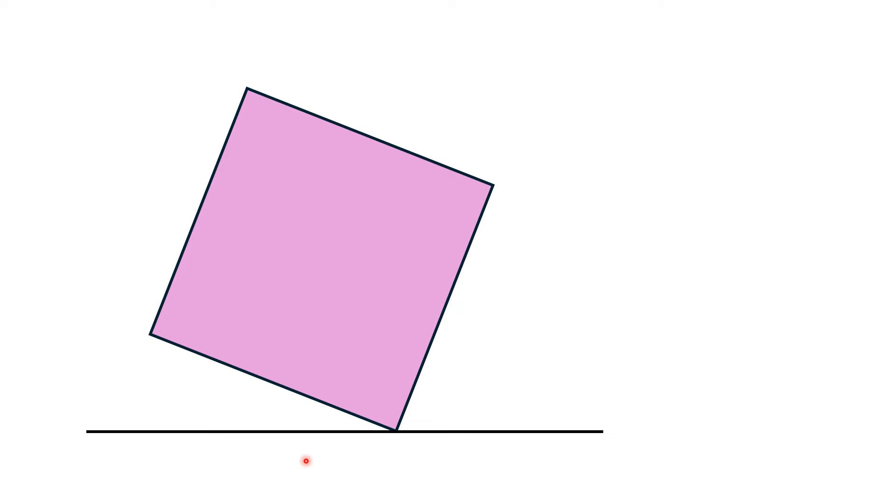Hello everyone, in this video given is a line segment on which a square is tilted. This square is supported from left and right by some objects.